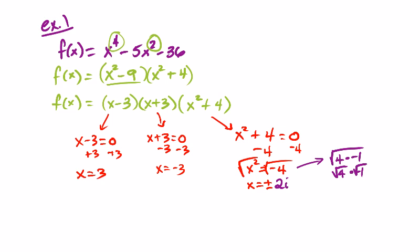And if you count it up, we should have four answers: x equals 3, x equals negative 3, x equals positive 2i, and x equals negative 2i. So we're good. So the zeros of this function are plus or minus 3, and plus or minus 2i. Let's look at another one, where maybe you would have to factor a little bit differently.